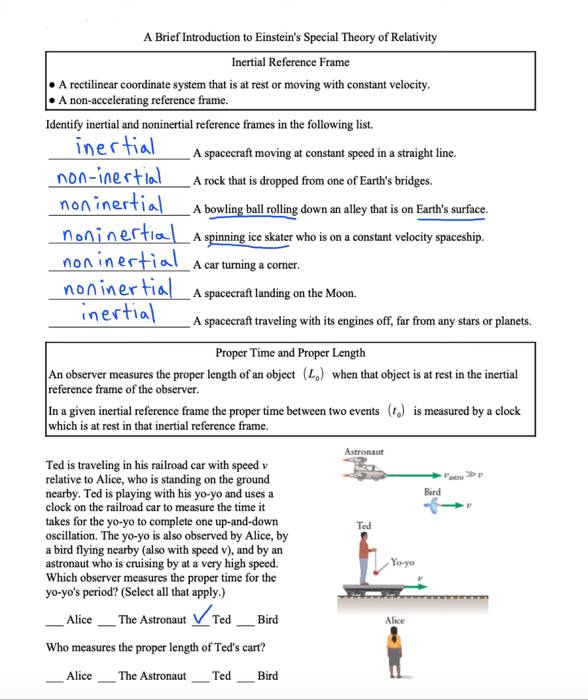Now the astronaut can't measure the proper time of the yo-yo either. Because its reference frame is moving much faster than Ted's is. But the bird has the same velocity as Ted. Therefore, they are actually considered to be in the same reference frame.